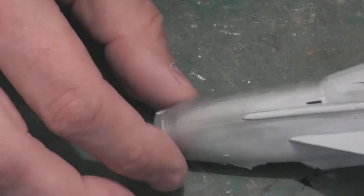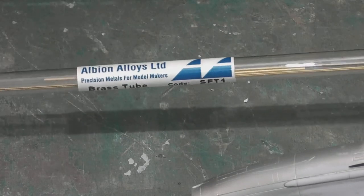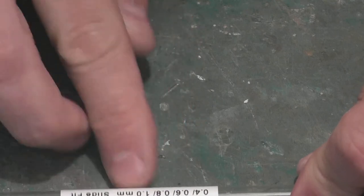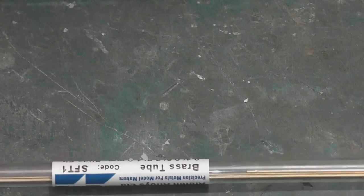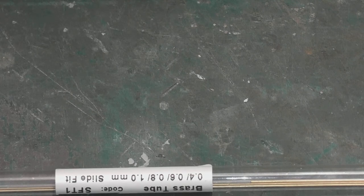First things first is that the pitot on the lightning mounts at the very end of the nose. There's a little mounting point that the pitot goes into. And what I use for this is Albion Alloys telescoping brass tube. They do a set which has a 0.4, 0.6, 0.8 and 1mm pieces of tube. They are telescoping, they all slide fit into each other. And to create this pitot tube, we're actually going to be using all four sizes of this tubing.